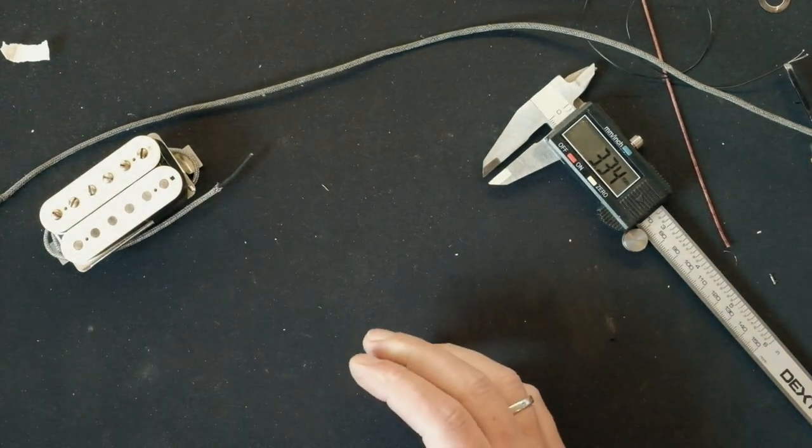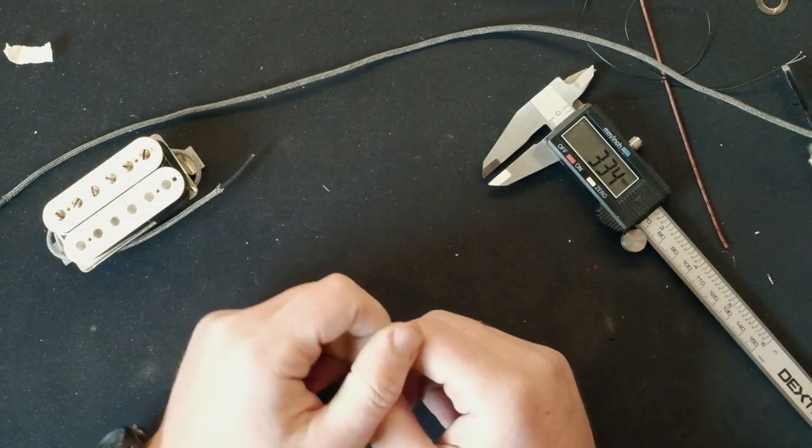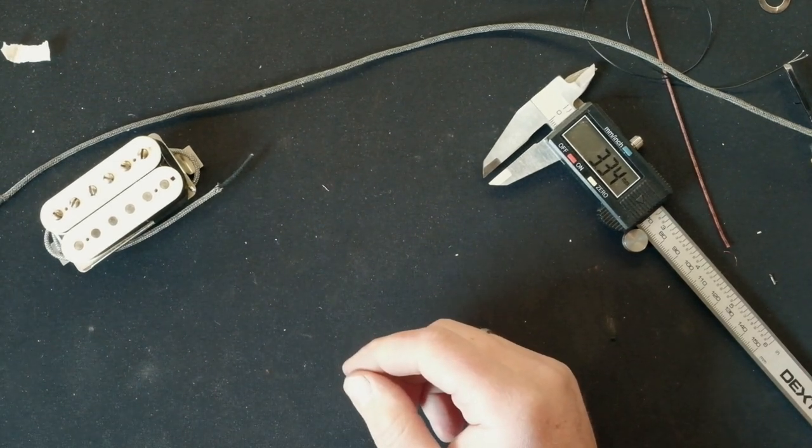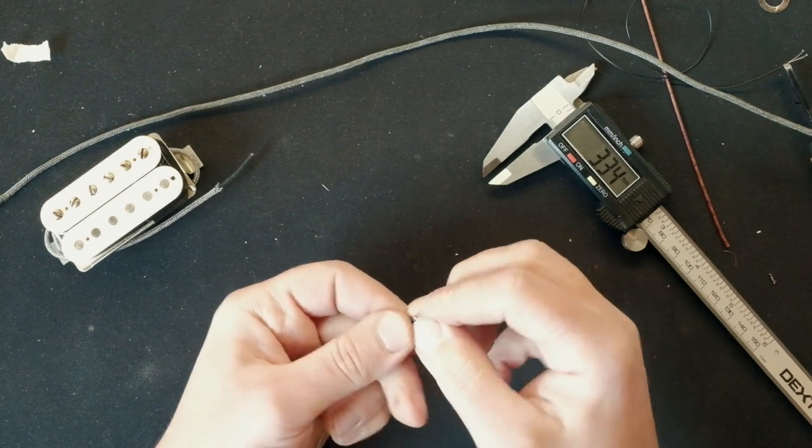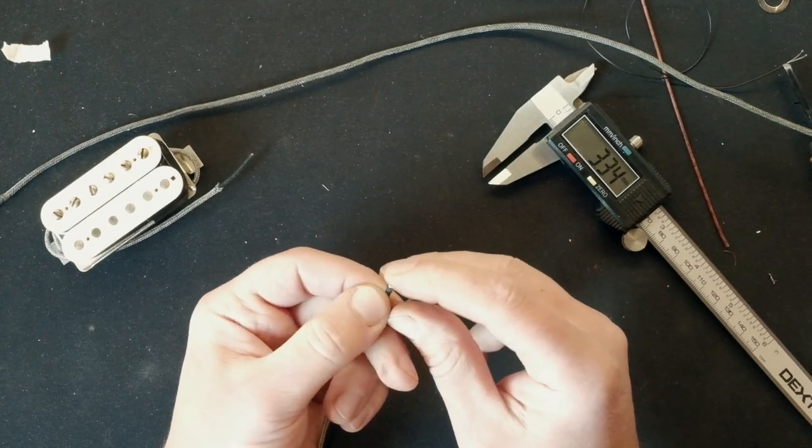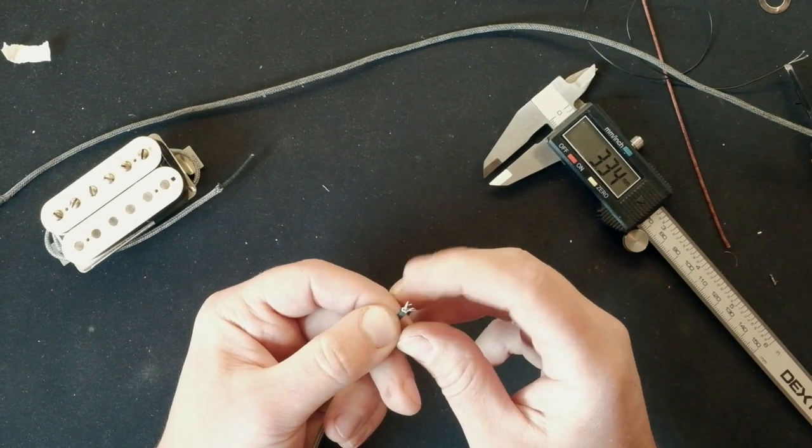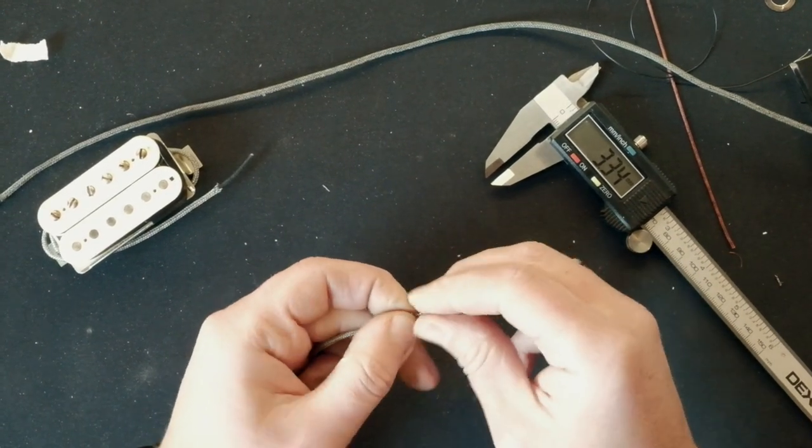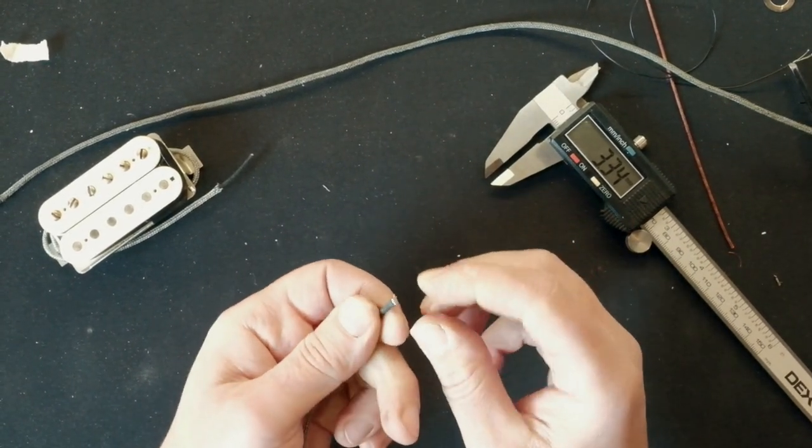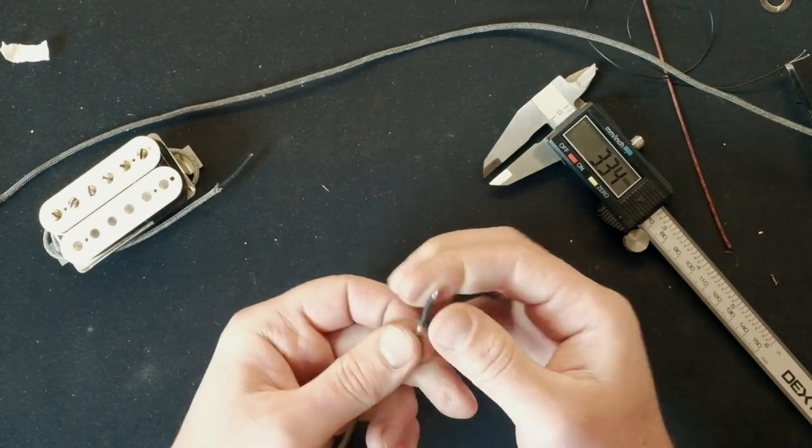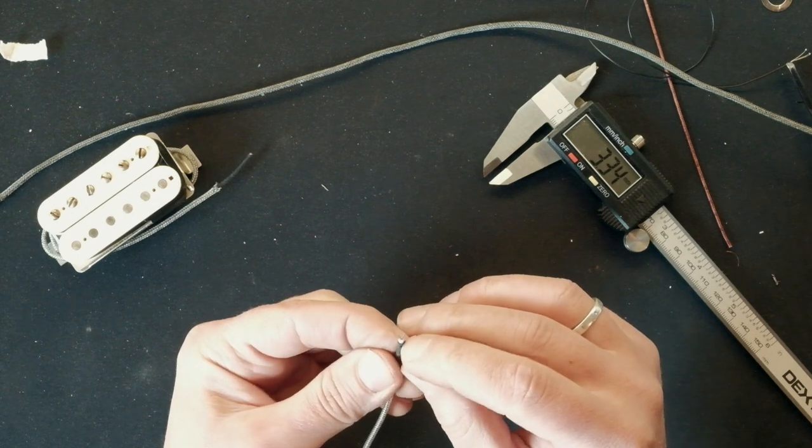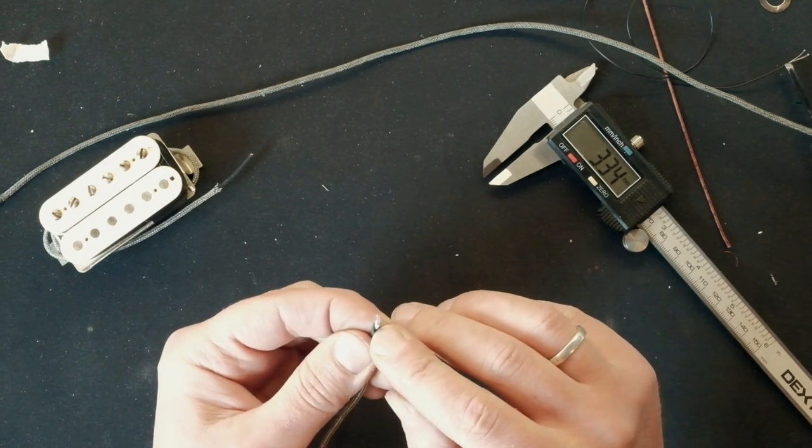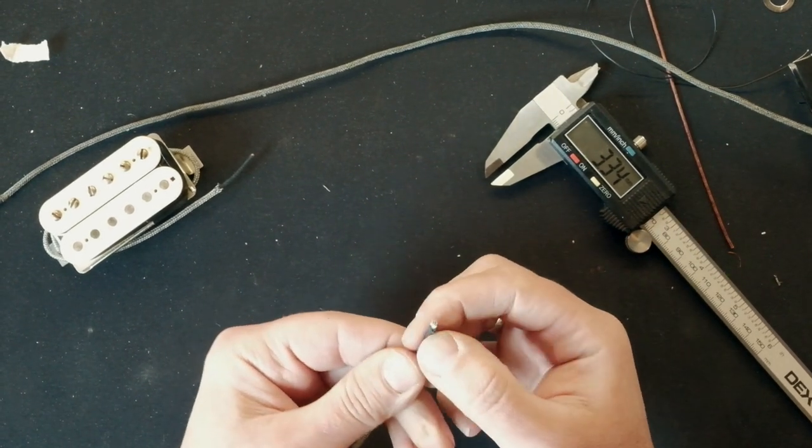But in a vintage Les Paul, a wire was used that was not soldered inside. Each core was tinned in it, but they are individually rolled up. There is also double fabric insulation here. The first layer is white fabric, white thread, and the second is black.